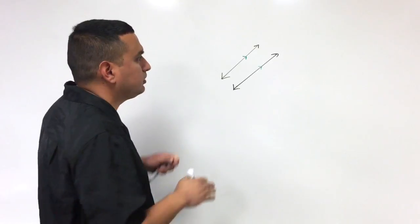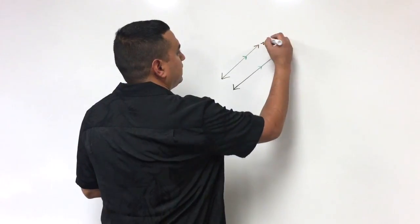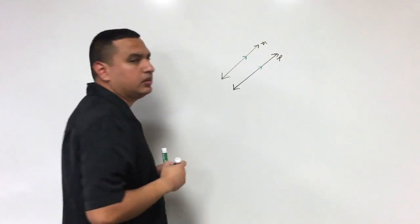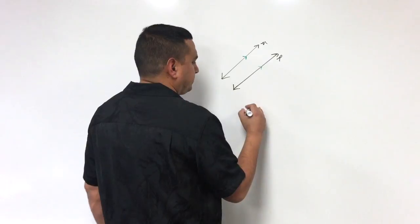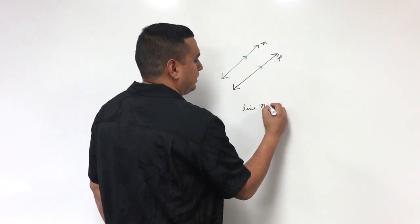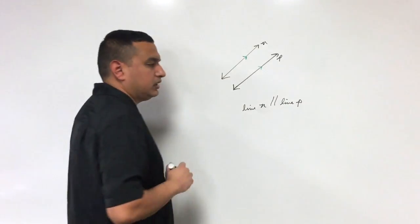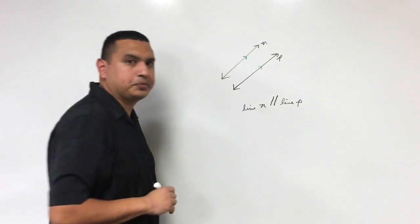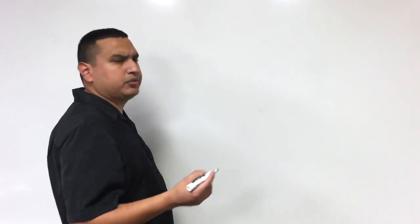That arrow would be the symbol for parallel on the diagram. Let's call these lines n and P. The written form would say: line n is parallel to line P. This symbol right here is the symbol for parallel.